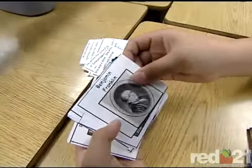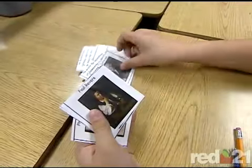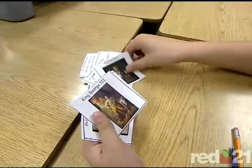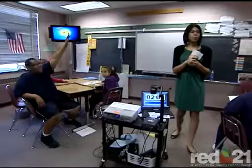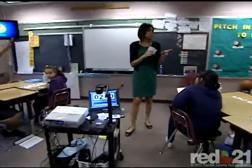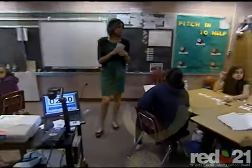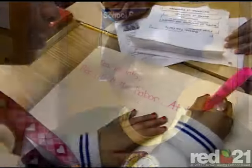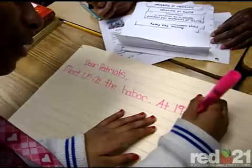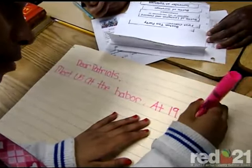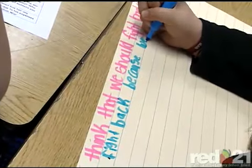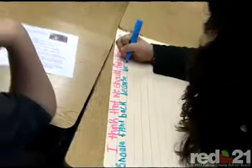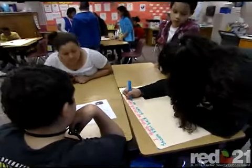Next stop on the critical and creative thinking trail: POV, or point of view. Usually with point of view, you put yourself in another person's place. In time, Crystal Trammell will ask her students to develop written documents such as speeches, invitations, and letters. Students will imagine themselves as participants of the American Revolution.